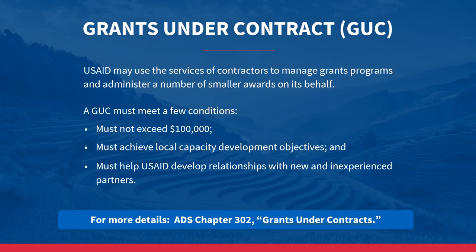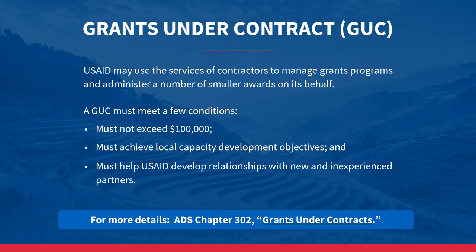You may notice that some USAID contractors issue grants under contract, or GUCs. In these cases, USAID may use the services of contractors to manage grants programs and administer a number of smaller awards on its behalf — often to expand USAID's partner base and develop local capacity. A grant under contract must meet a few conditions: the total value of an individual grant to a U.S. organization must not exceed $100,000 (this limitation does not apply to local non-U.S.-based organizations); it must enable USAID to achieve local capacity development objectives; and it must help USAID develop relationships with new, inexperienced, or underutilized partners.